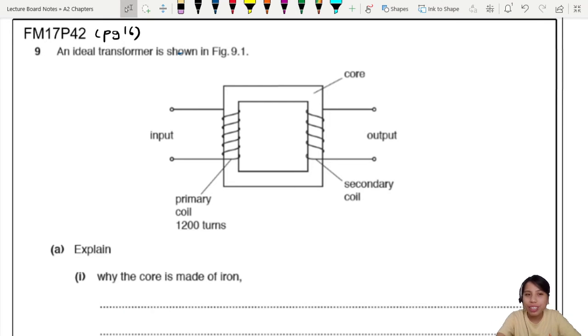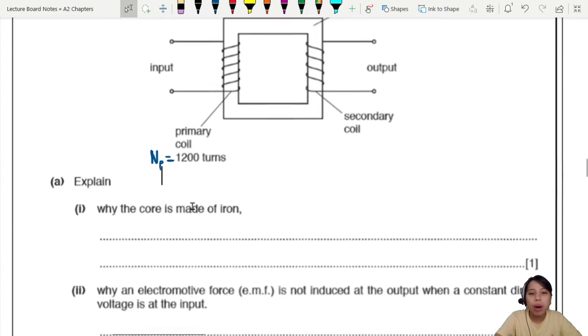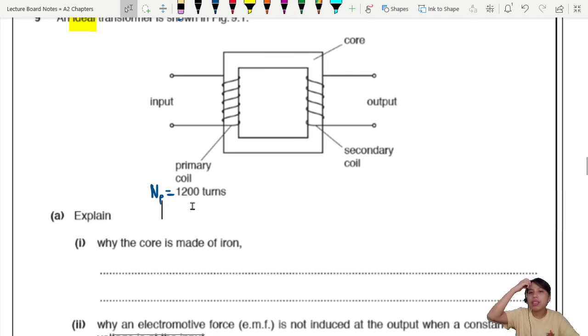Let's kick off Transformers with this question FM17 P42Q9. It's a good summary, lots of calculation. An ideal transformer is shown - ideal transformer means no energy loss. You got the input primary coil with N turns, the secondary coil. First question: explain why the core is made of iron. Why not plastic or rubber?